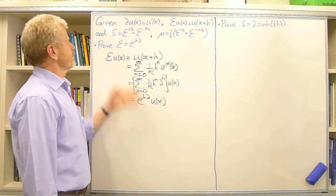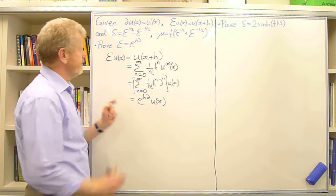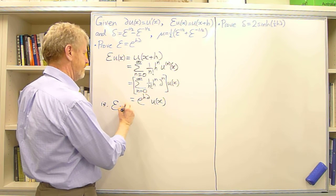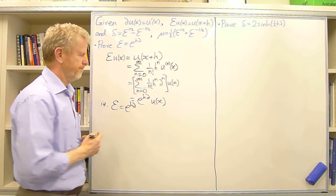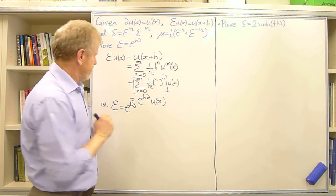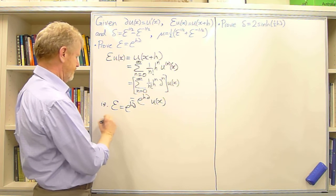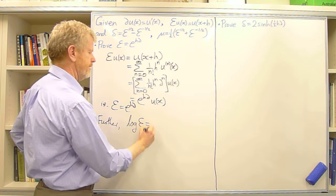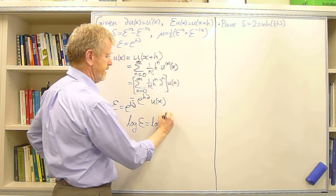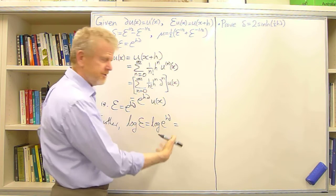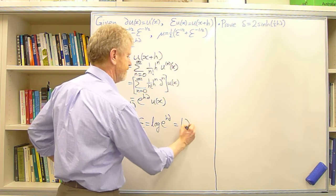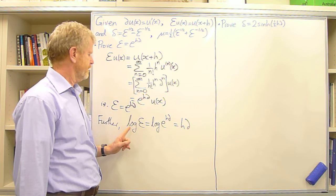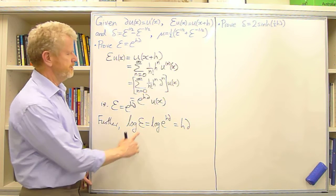Since this is true for all smooth u(x), we can say the two operators must be the same, so E equals e^(hD). Taking the logarithm of both sides, log(E) equals log(e^(hD)), and since the log of the exponential is just the argument, this is hD. This establishes the identity that hD equals log(E).